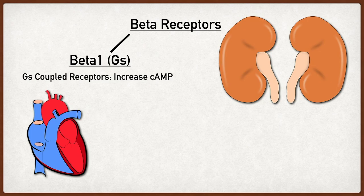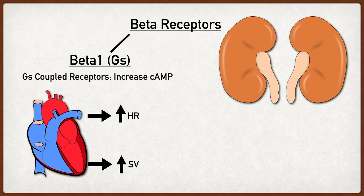Let's start with the heart. There are beta 1 adrenergic receptors located within the conduction system of the heart. When catecholamines such as norepinephrine and epinephrine bind to these beta 1 receptors, it's going to increase SA node automaticity and conduction velocity through the AV node, which will ultimately increase heart rate. There are also beta 1 adrenergic receptors on contractile heart muscles, and when catecholamines bind to these receptors it increases cardiac contraction, which will ultimately increase stroke volume. Cardiac output equals heart rate times stroke volume, so if we increase heart rate and stroke volume, we increase cardiac output.